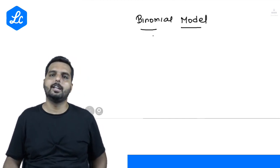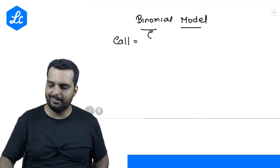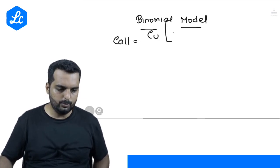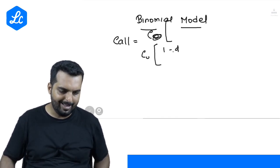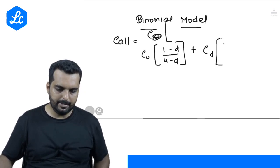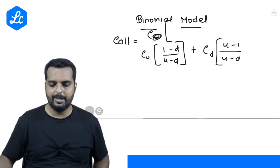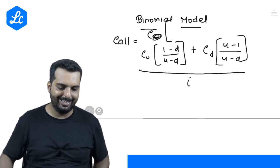Friends, first I will tell you the formula, then I will tell you the logic. The formula goes like this: the value of a call is equal to Cu into i minus d divided by u minus d plus Cd into u minus i divided by u minus d whole divided by i.